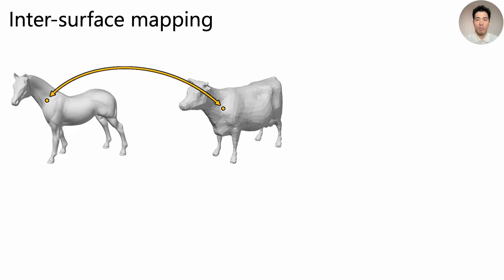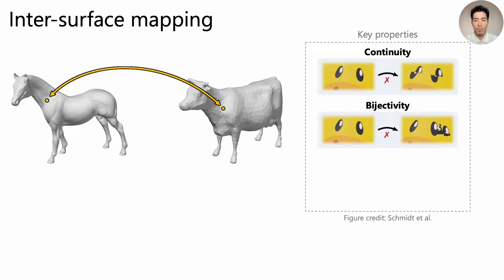This work is about inter-surface mapping, which is about finding correspondences between points on surfaces of the same genus. There are three key properties that we want to have in such maps: continuity, bijectivity, and low distortion.